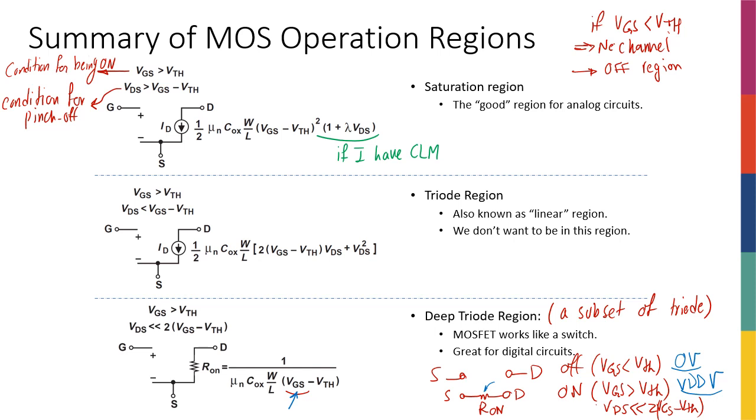Now going back to our discussions, just to summarize or recap: we have off region, we have saturation region where we are current source, we have a triode region which is the bad region of operation we don't want to be there, and we have deep triode region where it's a subset of triode region where VDS is very small and we are almost linear.